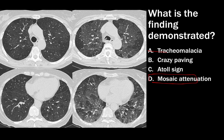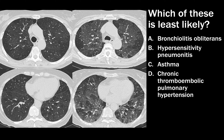Tracheomalacia is incorrect because there is no collapse of the trachea with exhalation. This is not crazy paving because there is no inter- or intralobular septal thickening. This is not the atoll sign, which is associated with organizing pneumonia. The next question asks which finding is least likely associated with this pattern — the answer is chronic thromboembolic pulmonary hypertension, which is a pulmonary arterial process rather than an airway process. While mosaic attenuation can be seen in CTEPH, it does not become dramatically more pronounced on exhalation.